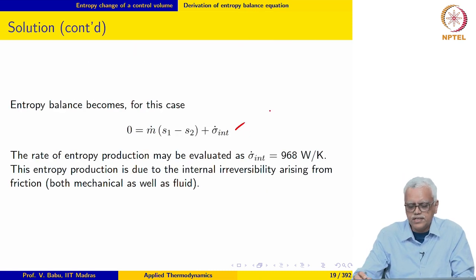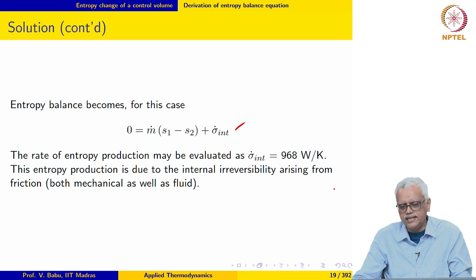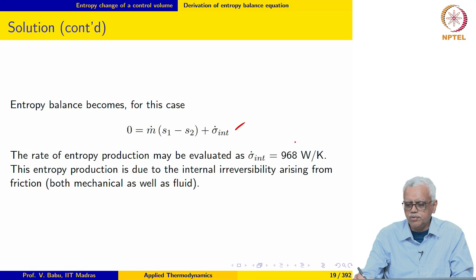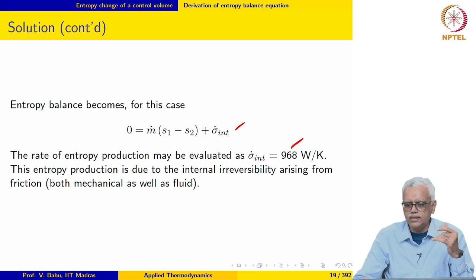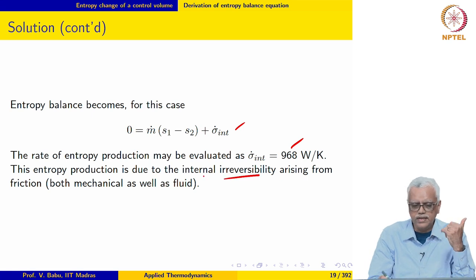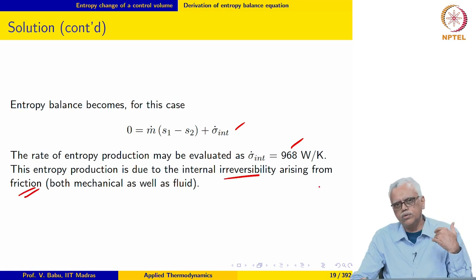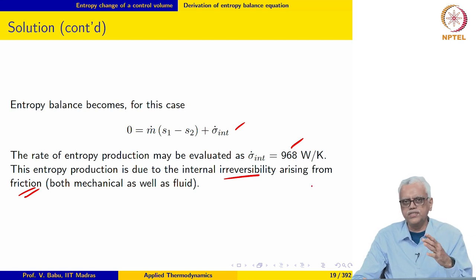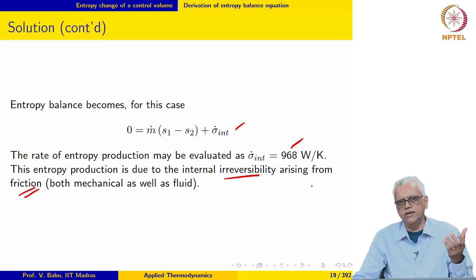The entropy balance equation for this case, after setting the integral equal to 0, gives the rate of entropy production as 968 W/K. This entropy generation is due to internal irreversibility arising from friction — both mechanical friction and fluid friction or viscous effects — which is the cause of entropy generation internally within this device.